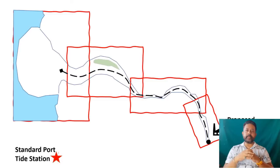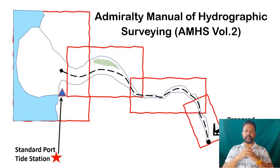So in the first scenario, you decided to use the standard port tide datum and transfer it from there to your survey area. There are a couple of ways you can do that and you have to follow a general rule as directed in the Admiralty Manual of Hydrographic Surveying Volume 2.